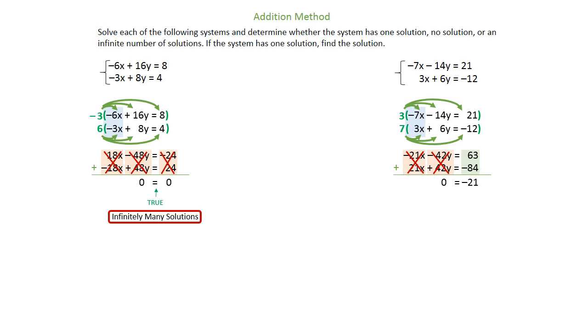But this time, the numbers on the right-hand side don't cancel. They actually add together to give you a negative 21. When this happens, 0 obviously is not equal to negative 21, so that's a false statement. And that's when you have no solution. These would be parallel lines and never touching.